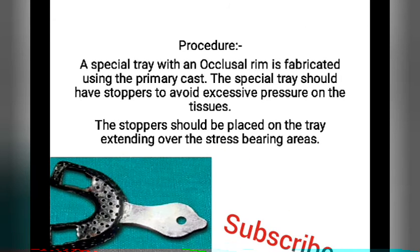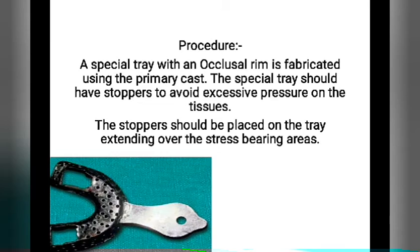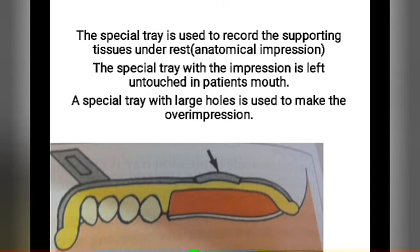What is the procedure for handles modification? A special tray with an occlusal rim is fabricated using the primary cast. The special tray should have stoppers to avoid excessive pressure on the tissue. The stoppers should be placed on the tray extending over the stress-bearing area.